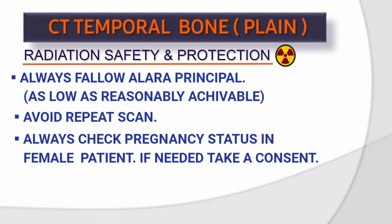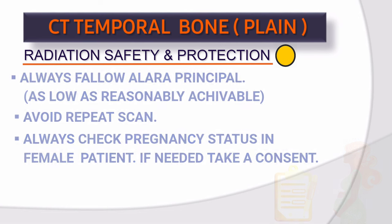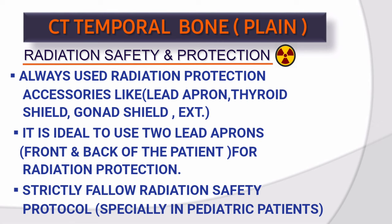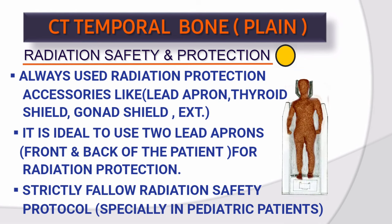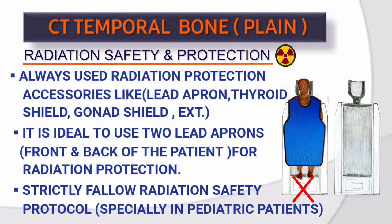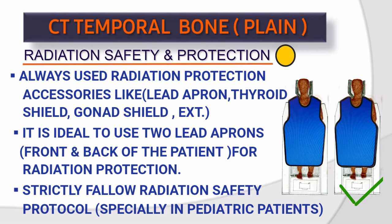Radiation safety and protection: Always follow the ALARA principle — as low as reasonably achievable. Avoid repeat scans. Always check pregnancy status in female patients; if needed, take consent. Always use radiation protection accessories like lead apron, thyroid shield, and gonad shield. It is ideal to use two lead aprons — front and back of the patient. Strictly follow radiation safety protocols, especially in pediatric patients.